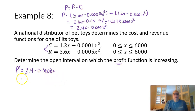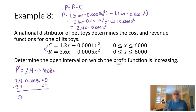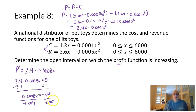Now that we have our profit function, let's find the first derivative. P prime equals 2.4 minus 0.0008x. To find critical numbers, we set this equal to zero since it's never undefined. Subtracting 2.4 from both sides gives negative 0.0008x equals negative 2.4. Dividing gives x equals 3,000 — our critical number.